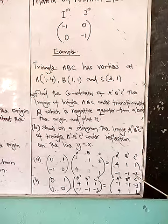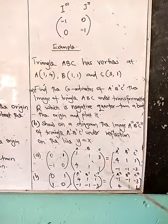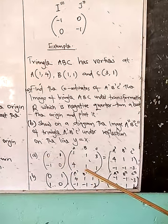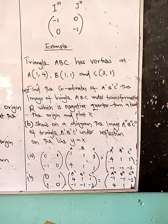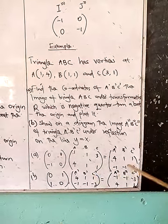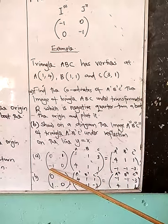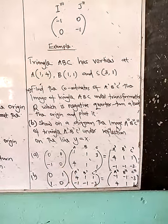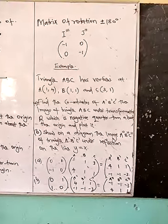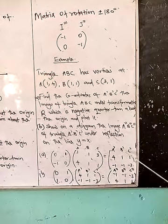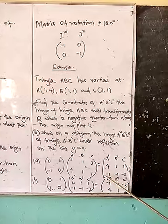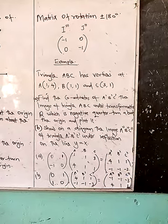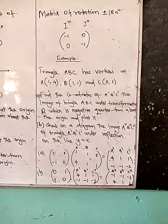The coordinate of C prime is (1, −3). We multiply the coordinate of C by the matrix of transformation: 0×3 + 1×1 = 1, and (−1)×3 + 0×1 = −3. Therefore the coordinates of A', B', and C' written in column form are (4, −1), (1, −1), and (1, −3).